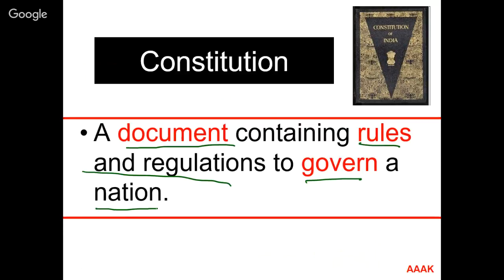The constitution is a document which contains the rules and regulations about how a nation is to be governed. It forms the bond between the people and the government. The rights and obligations of the people and the government are clearly specified. The government is not permitted to do anything that is unconstitutional. The constitution provides mechanisms to protect itself.